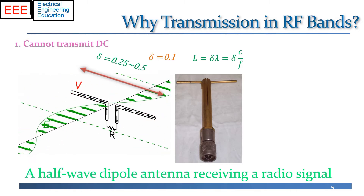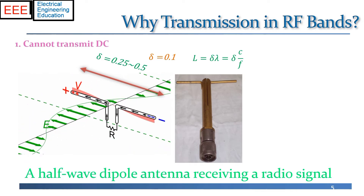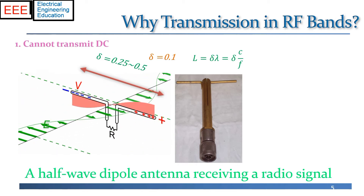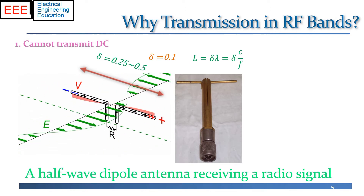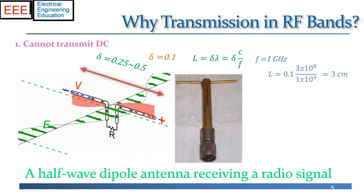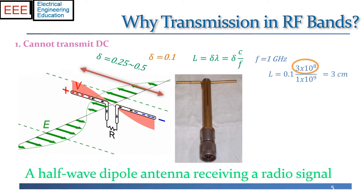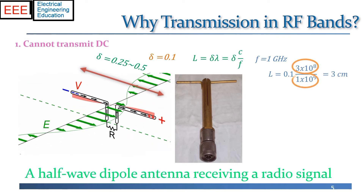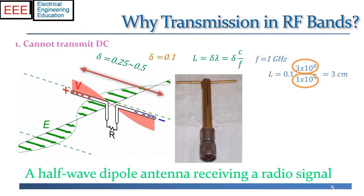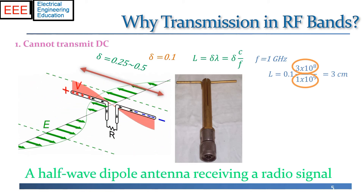Less than 0.1 wavelength becomes really problematic. So if we try to transmit at 1 gigahertz, the antenna length needs to be about 0.1 times the wavelength. The wavelength at 1 GHz is the speed of light divided by the frequency, which is about 3 centimeters. A 3 centimeter antenna is not that big a deal — we can visualize how to fit it into an actual system. But let's do the same calculation for baseband frequencies.